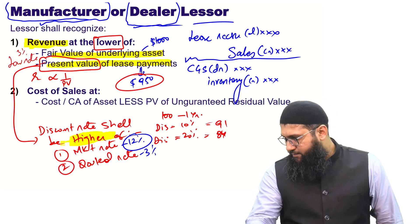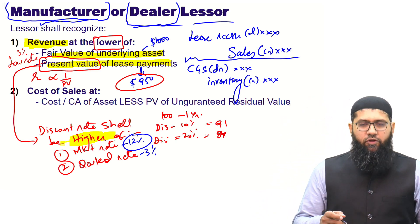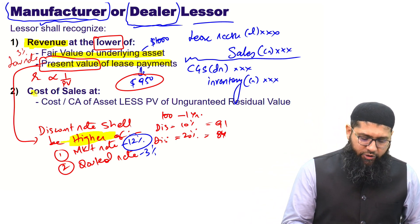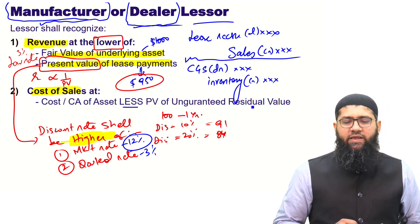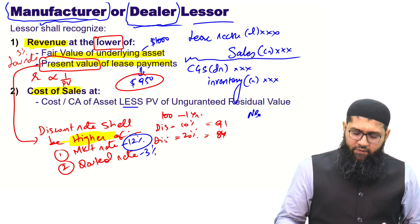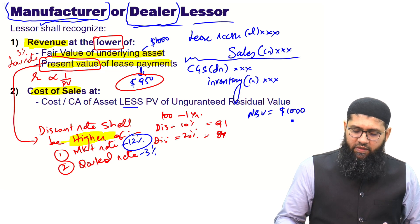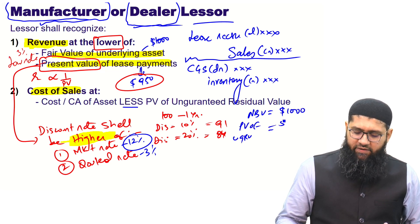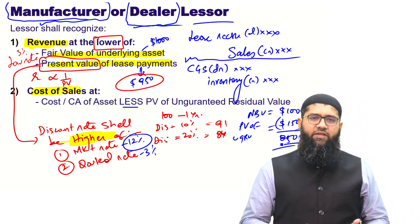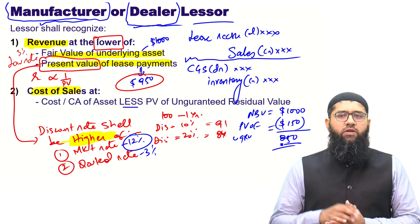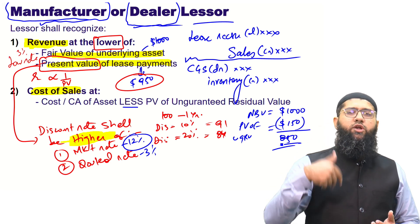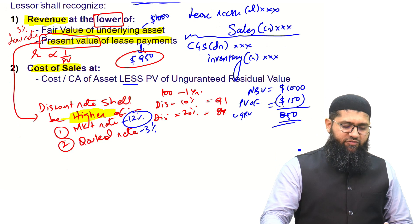You also need to recognize the cost of goods sold. The cost of sales is the carrying amount of the asset less the present value of the unguaranteed residual value. For example, if the net book value of inventory is $1,000 and the present value of the unguaranteed residual value is $150, then $850 is removed from the financial statements as a cost charged to P&L for the inventory. The remaining $150 stays in the books because some portion of the residual value is going to accrue back to us.